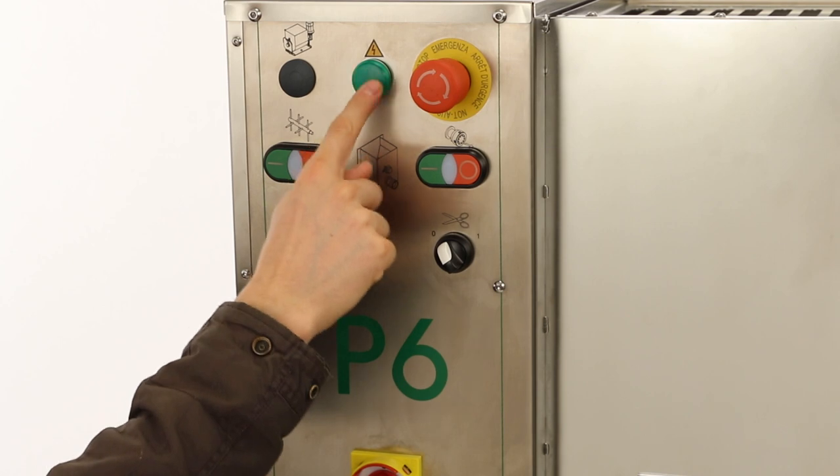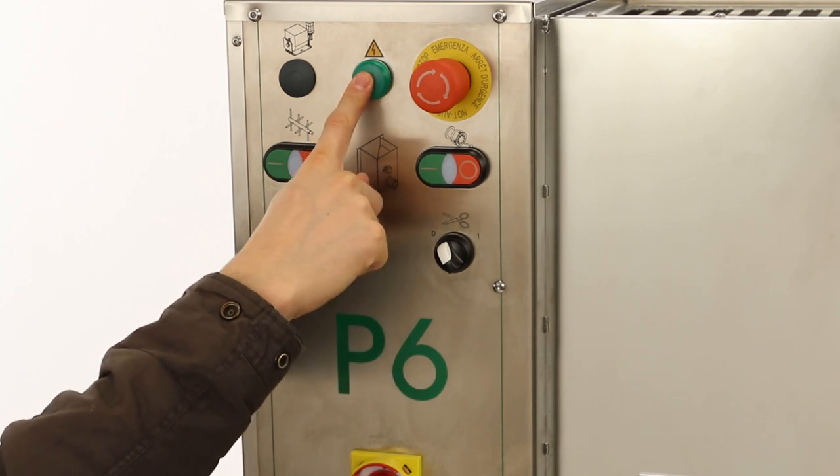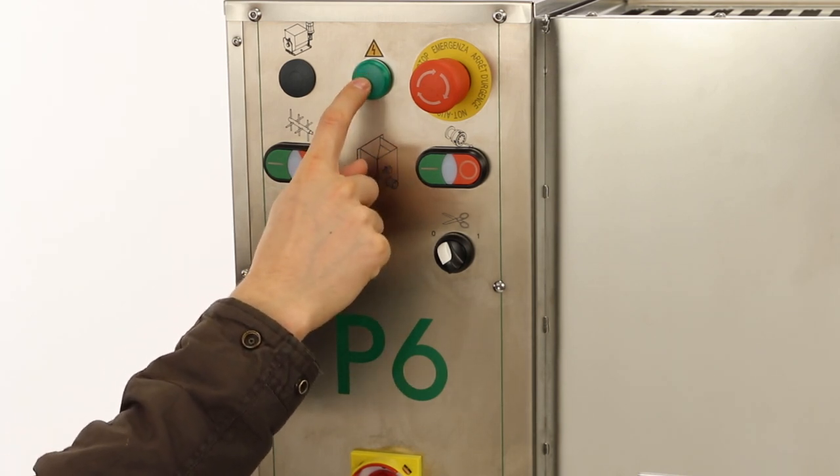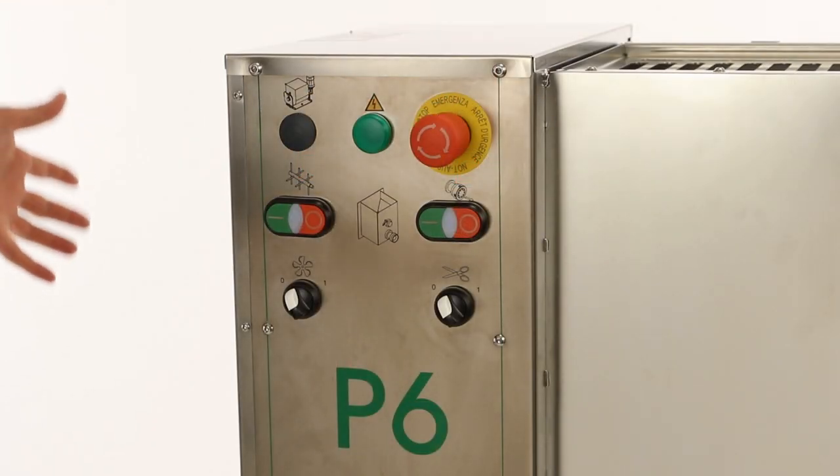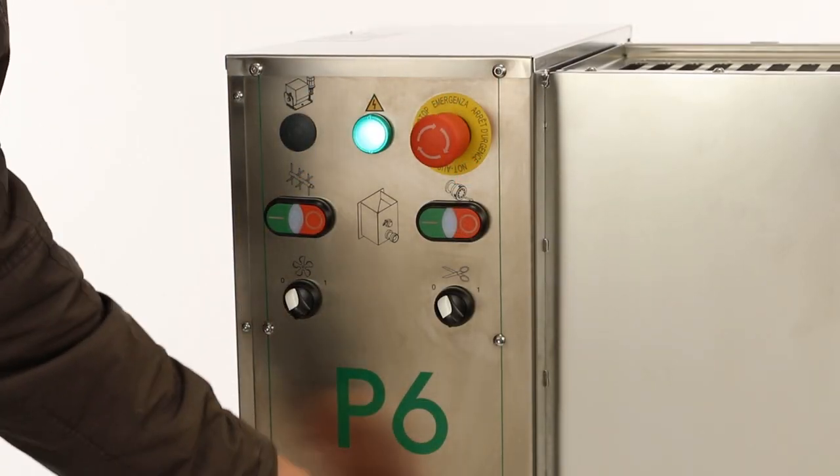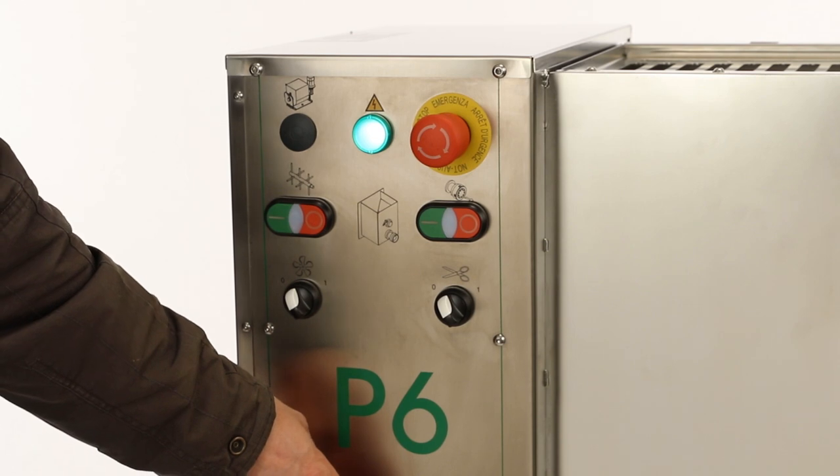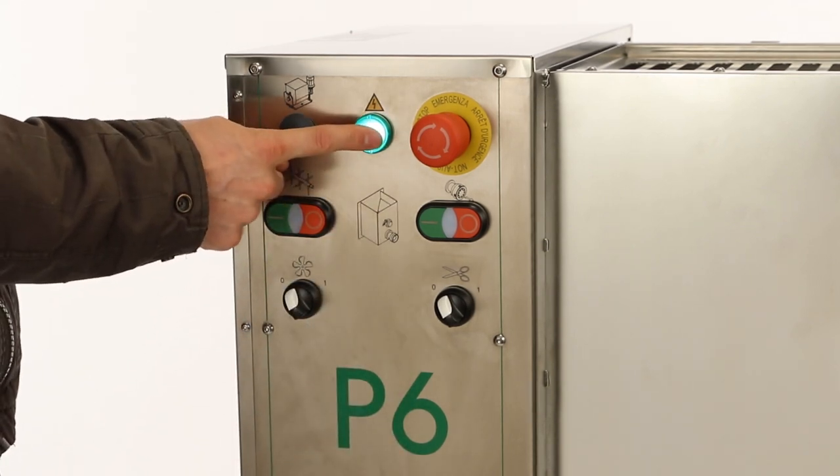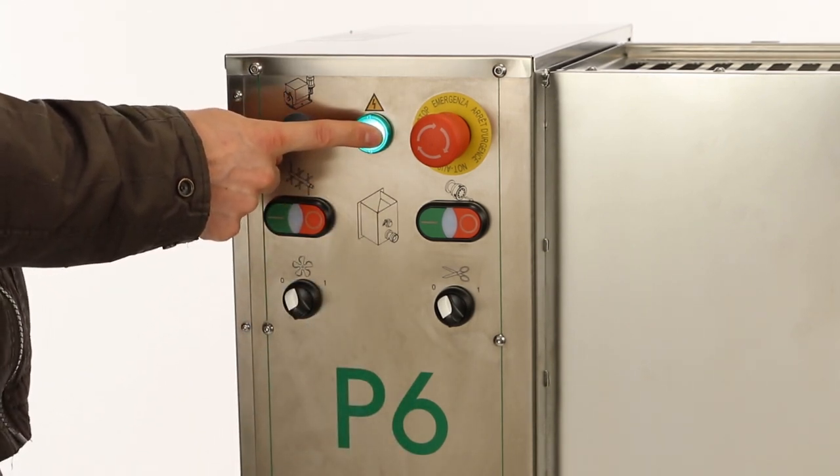This is a green indicator light, which indicates you have power. Anytime the machine is switched on, this light will remain on. After the machine's plugged in, when the on-off switch is moved to the one position, the green light illuminates, indicating that you have power and the machine's ready to start.